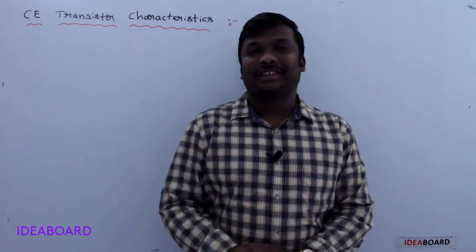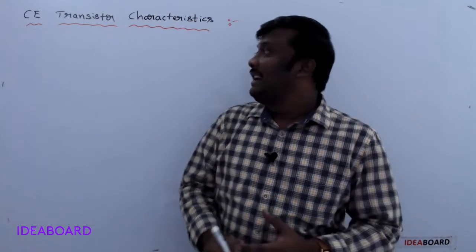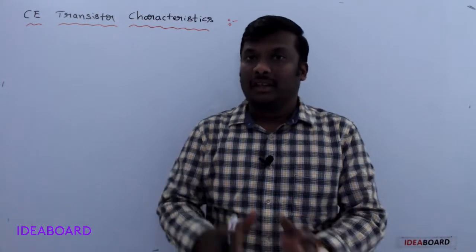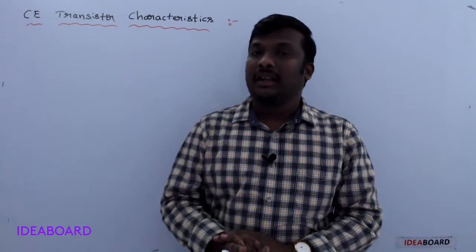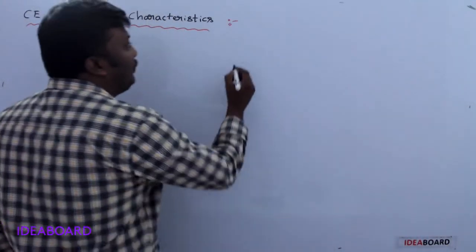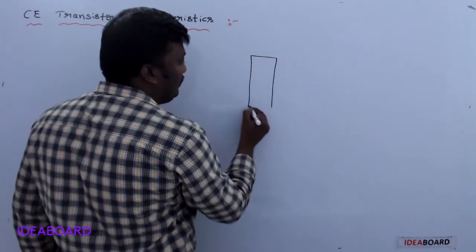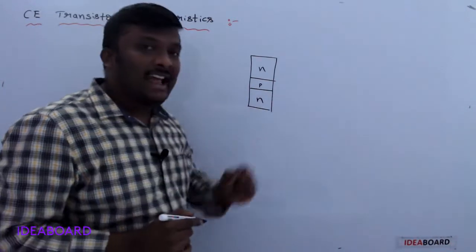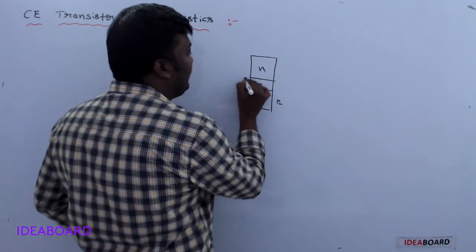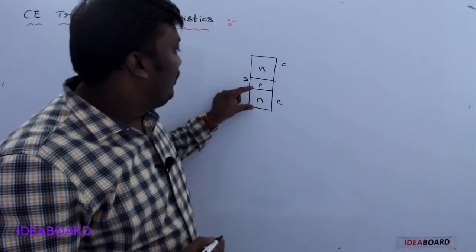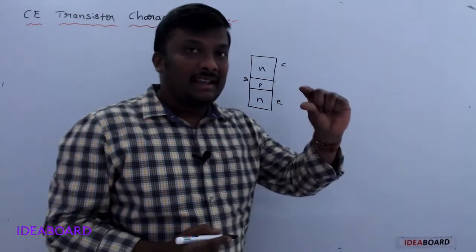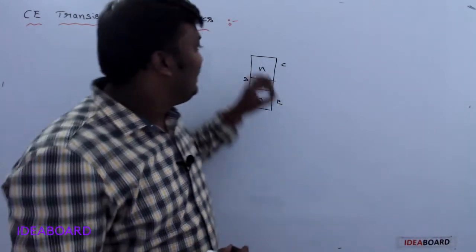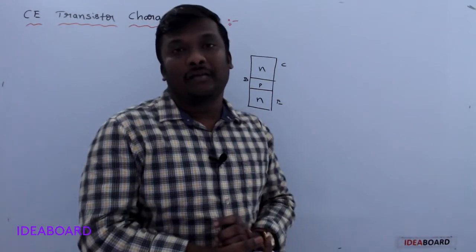In today's section we are discussing about common emitter transistor characteristics. In the previous video we discussed about the common emitter configuration. To recall: if you take one NPN transistor, it has three terminals — emitter, base, and collector. The emitter is moderately sized but heavily doped, base is lightly doped and very thin, and the collector is moderately doped but very large in size.